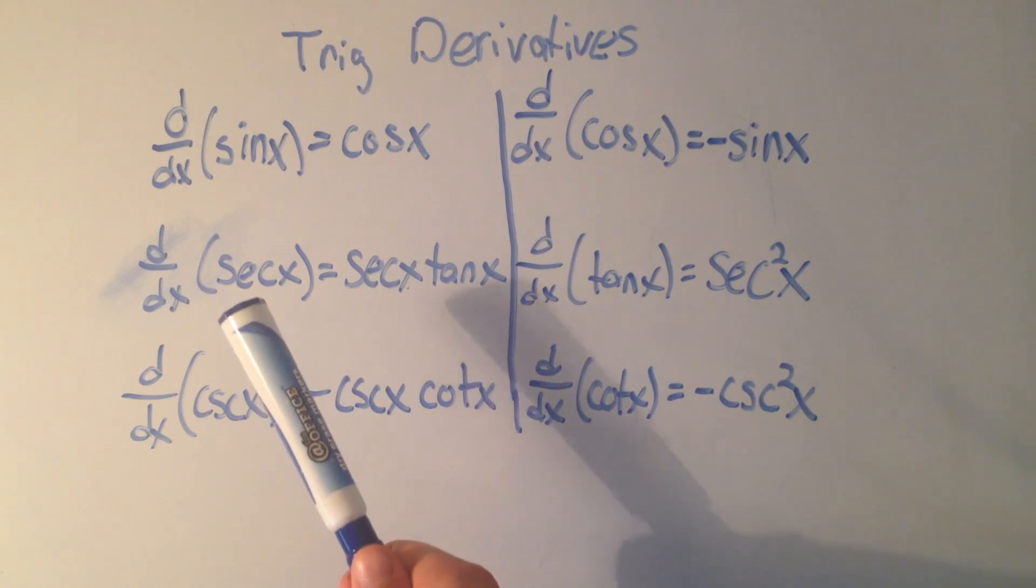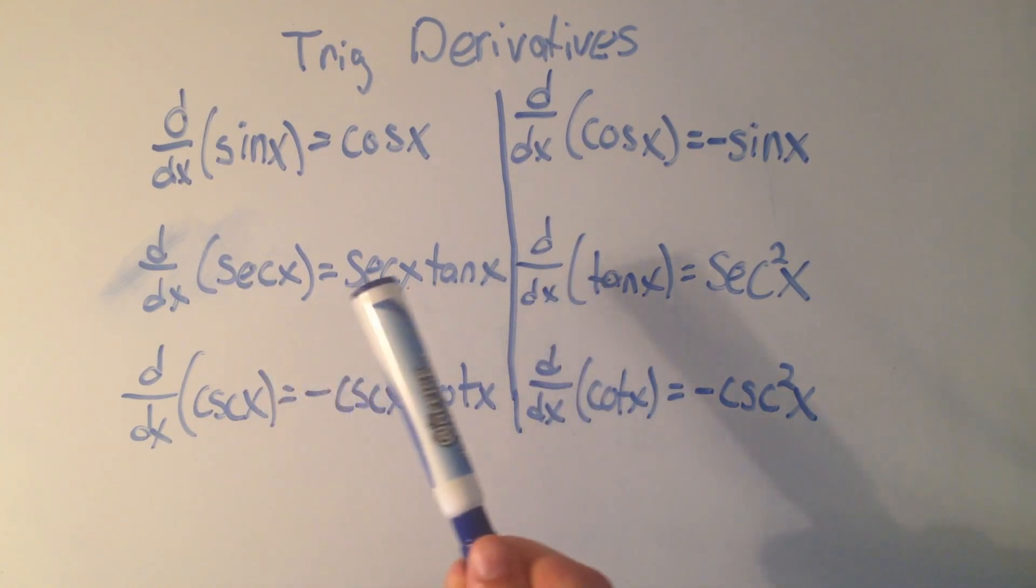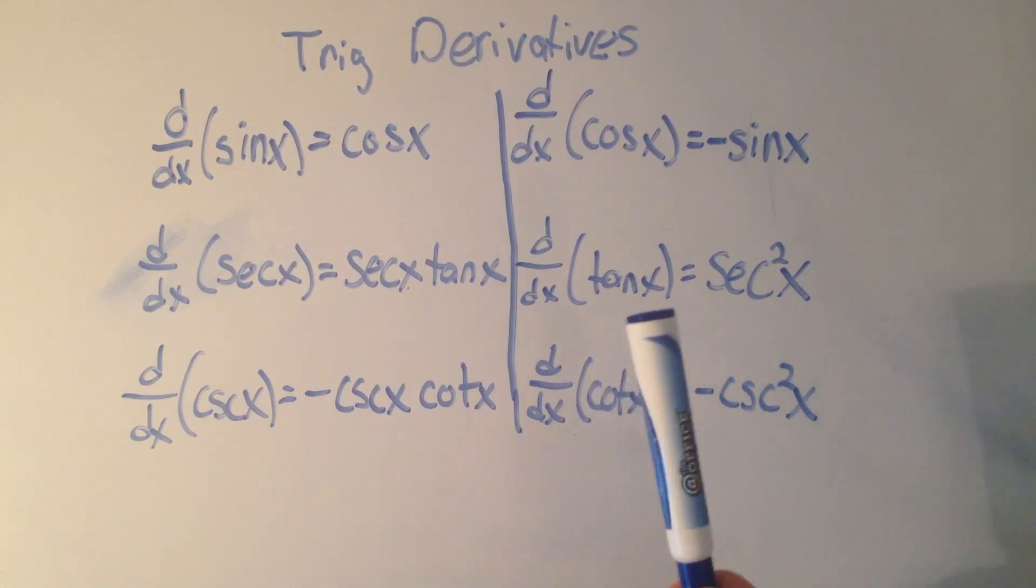Moving down to secant, the derivative of secant is secant tangent. That might be a little harder to remember, but we'll see that things start to go together. The derivative of tangent is secant squared.